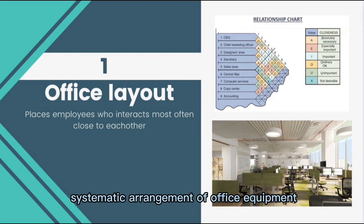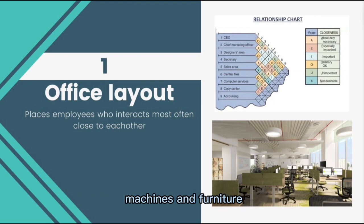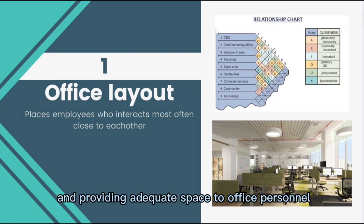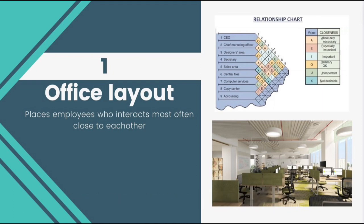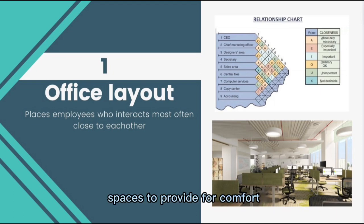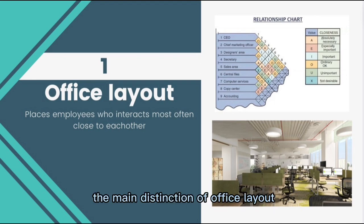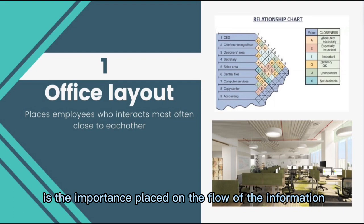First, we're starting off with the office layout. An office layout is the systematic arrangement of office equipment, machines, and furniture, providing adequate space to office personnel for regular performance of work with efficiency. It requires the grouping of workers, their equipment, and spaces to provide for comfort, safety, and movement of information. The main distinction of office layout is the importance placed on the flow of information.